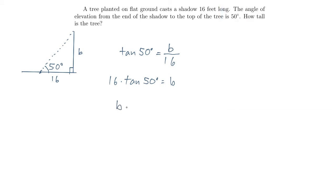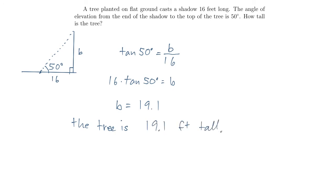Rounding to the nearest tenth of a foot, that would be 19.1. So b is equal to 19.1. And since this is a word problem, we should have a word answer: the tree is 19.1 feet tall. So there's a quick example of how to solve a word problem involving right triangles. Hope this has helped, and thanks for watching.